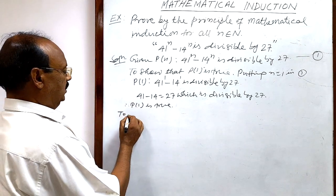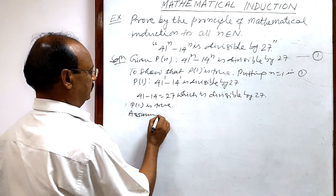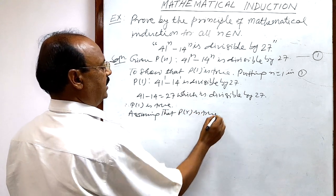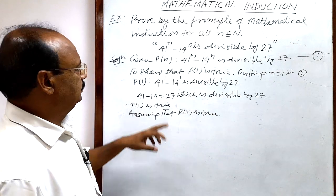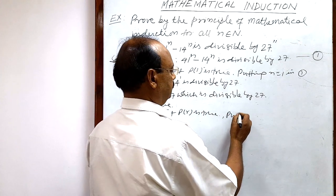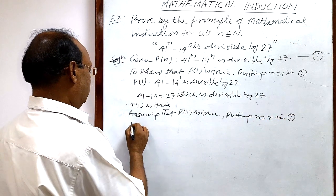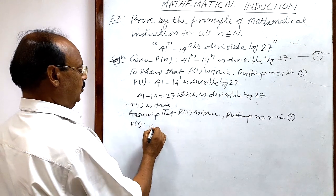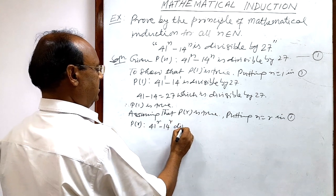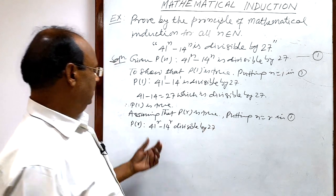Second step: we assume that P(r) is true. We get P(r) by putting n equal to r in relation number one. Therefore, putting n equal to r in relation number one, we get P(r): 41 to the power r minus 14 to the power r is divisible by 27, and we are assuming this is true.